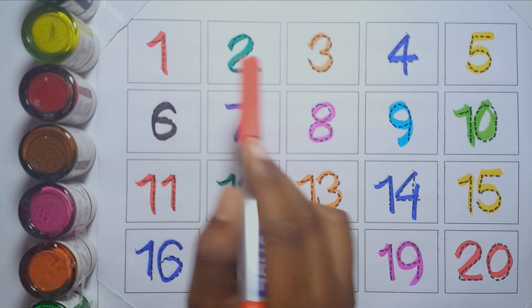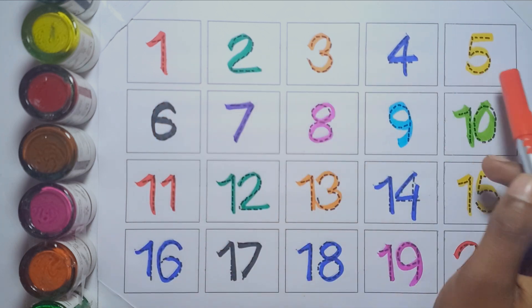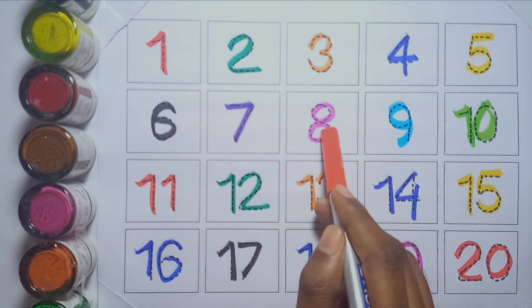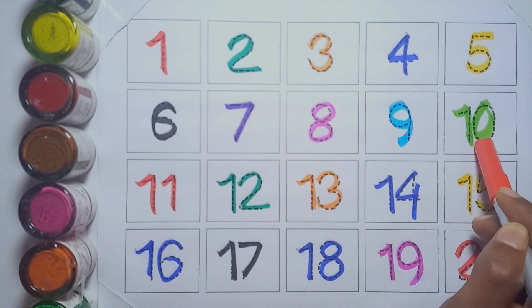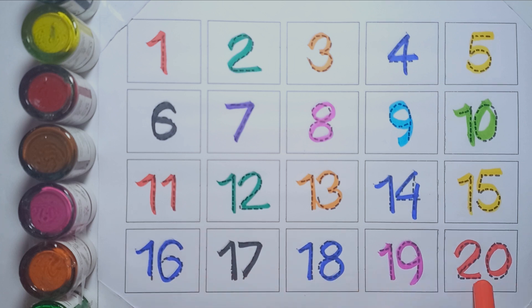1, 2, 3, 4, 5, 6, 7, 8, 9, 10, 11, 12, 13, 14, 15, 16, 17, 18, 19, 20.